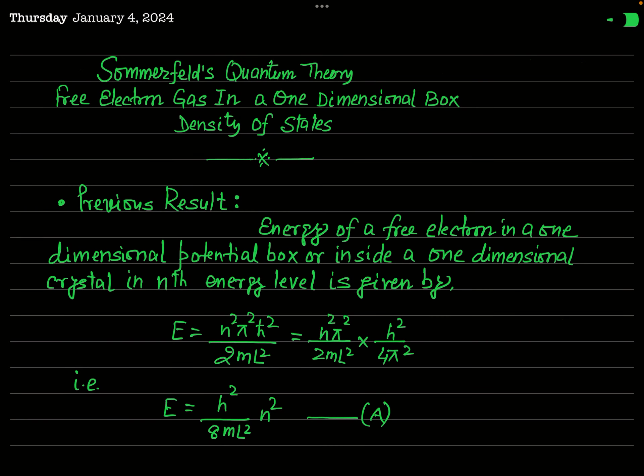From the previous few lectures we have started to deal with the problem of Sommerfeld's quantum theory. We have seen how to find the energy eigenvalue and eigenfunction of a free electron gas in a one-dimensional box. After calculating those, in the previous lecture we found two very important quantities: Fermi energy and the total energy of electrons in a metallic specimen. Today we will see the calculation of a very important quantity called density of states.